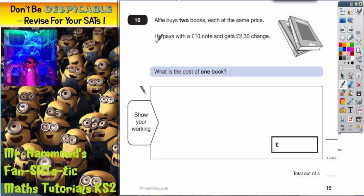Okay, question 16 is a money question. Alfie buys two books, each at the same price. He pays with a ten pound note and gets two pound thirty change. What is the cost of one book? Well, if we start...